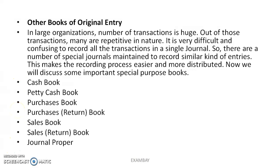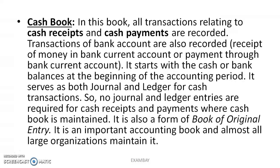Now let's look at the subsidiary books maintained alongside the journal and ledger. These include: cash book, petty cash book, purchase book, purchase return book, sales book, sales return book, and journal proper. Remember these. The cash book records all cash receipts and cash payments. It is a very important book and each organization maintains it.